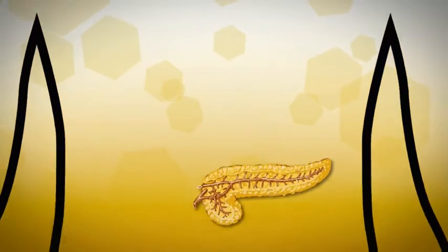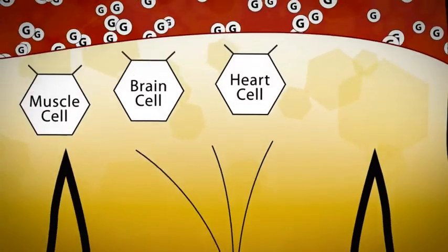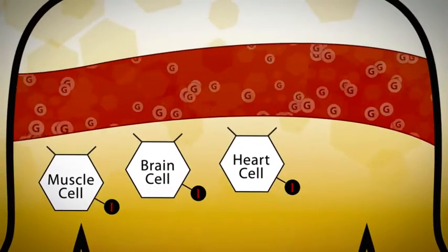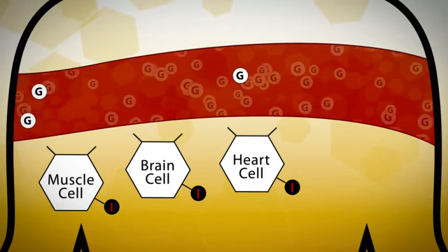As glucose moves through our bloodstream, our pancreas produces a hormone called insulin. Insulin is the gatekeeper of our cells. It opens the door, allowing glucose to enter and be used for our energy needs. Without it, our cells can't be fed.